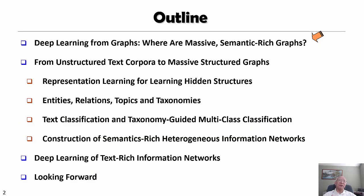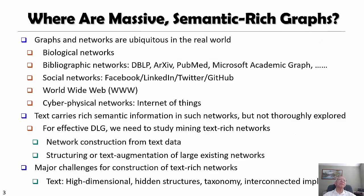Deep learning from graphs has been a very hot research topic. But one thing we may want to ask is: where do the massive semantic-rich graphs come from? We see lots of different kinds of graphs — biological networks, bibliographic networks, social networks, the worldwide web, or cyber-physical networks. For mining these gigantic graphs, one important question is where the rich semantic information comes from. The graph structures give us rich semantic information, but usually they also have lots of text associated with those semantic constructions. So what we need to study is how to use text to do mining on text-rich networks.